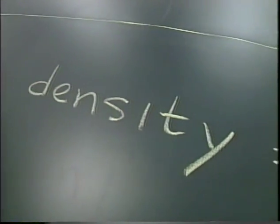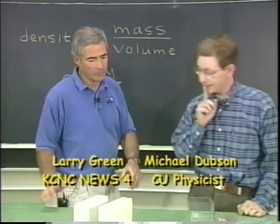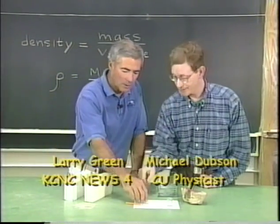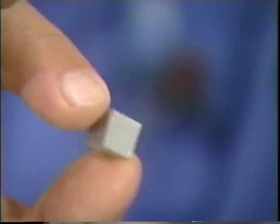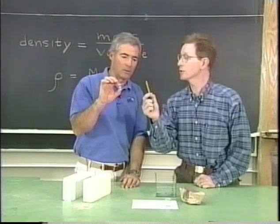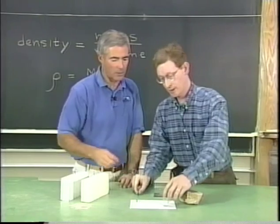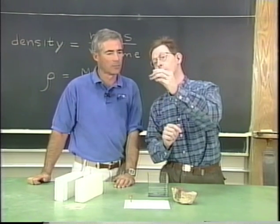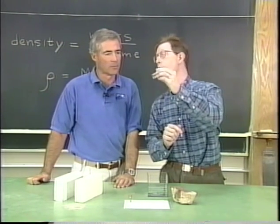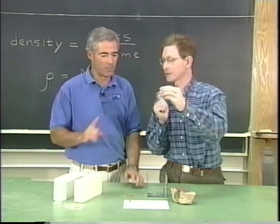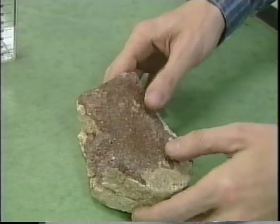Density is mass per volume. The density of water is one gram per cubic centimeter. This is a cubic centimeter, and this pencil weighs about two grams. So a scientist would say that the density of water is one — that's our base. One gram per cubic centimeter.